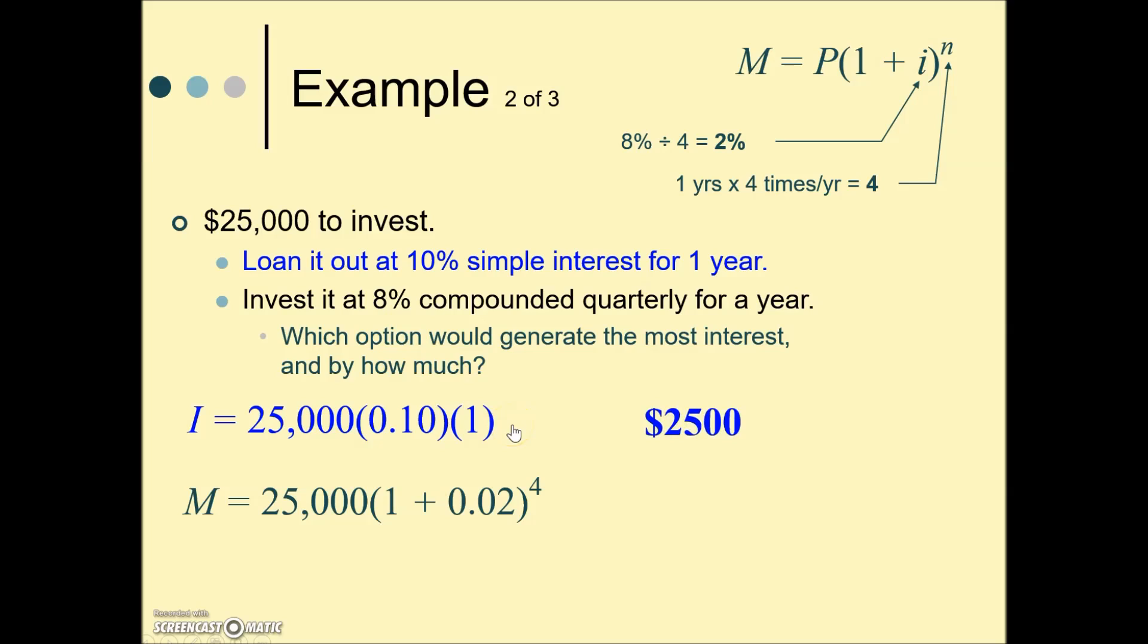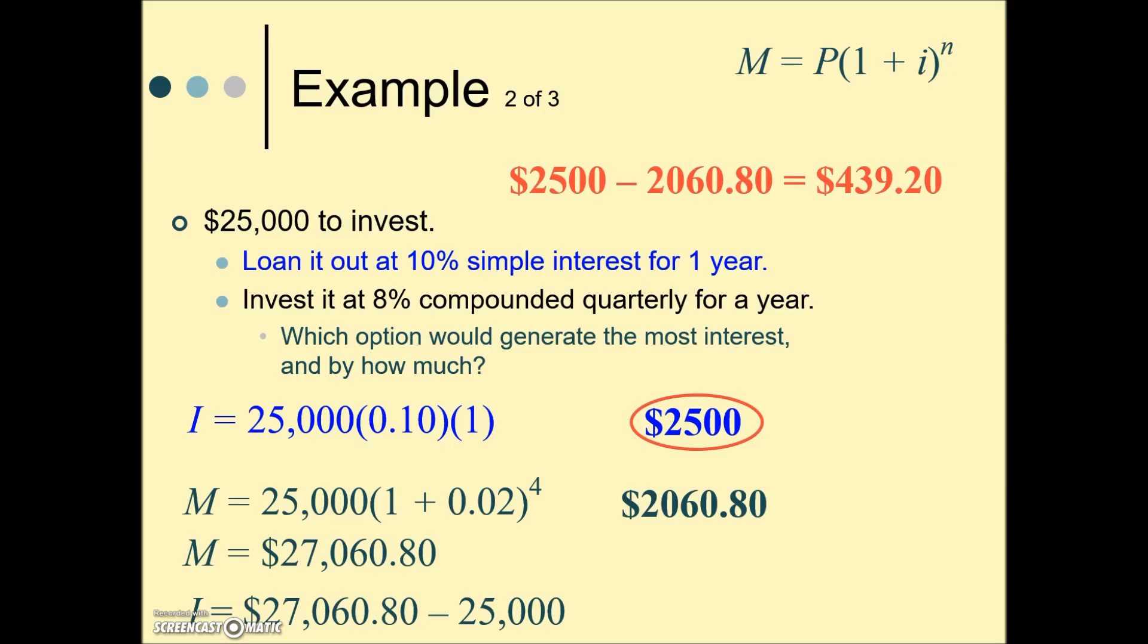Well, in the first option when you do your multiplication, that interest is $2,500. When you enter this in your calculator using your exponent key, we get the maturity value. We're interested in comparing our interest between these two, so we need to subtract off the principal investment from the maturity value or balance after the one year. And we see that at a lower interest rate, even though it's compounded quarterly, we're not making as much in this short-term investment. Perhaps if we had a much longer investment, the 8% compounded quarterly would exceed the simple interest. The difference between these two options is $439.20.